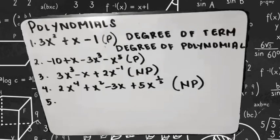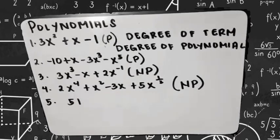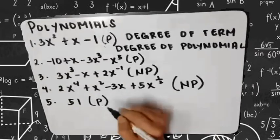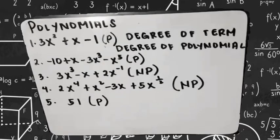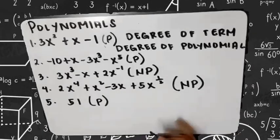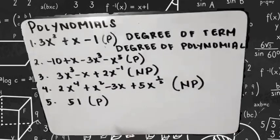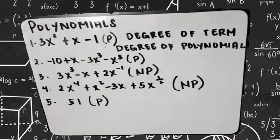Number 5: 51. That is a polynomial. As we saw in our monomial examples, a constant number by itself is still considered a polynomial — it just has no variable attached. It is one term, so that is a monomial. The degree of the term is 0, and the degree of the polynomial is also 0.